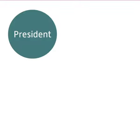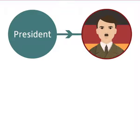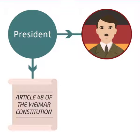The power of the President was also important. He appointed the Chancellor and held the power to implement Article 48 of the Constitution. This article allowed him to rule by decree, without the approval of the Reichstag, during times of emergency.